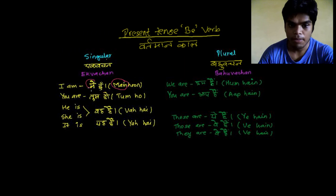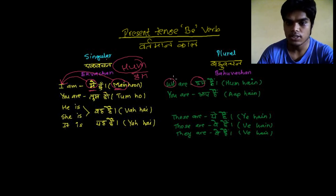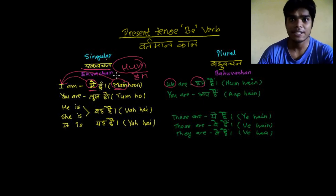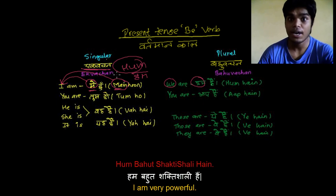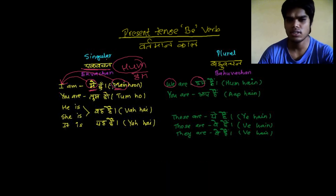The first thing: 'main' (I) — sometimes in place of 'main' we use 'hum' also to represent a singular thing. The person who is in power, or writers when they write, generally use 'hum' instead of 'main'. Suppose a king is saying 'I am very powerful' — that time the king will say 'hum bahut Shakti shali hain' instead of 'main bahut Shakti shali hoon'.